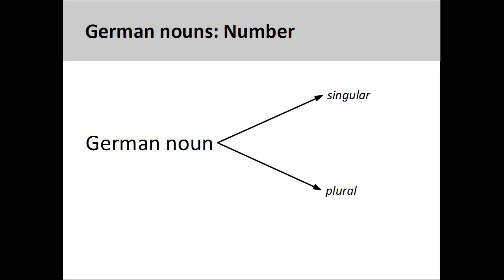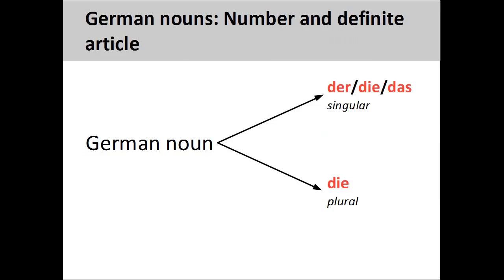German nouns can either be singular or plural. Unlike singular nouns, plural nouns manifest no gender. The only definite article for plural nouns is 'die.'